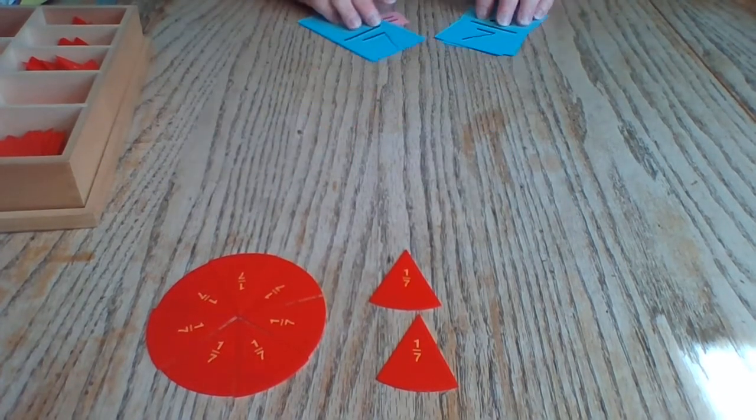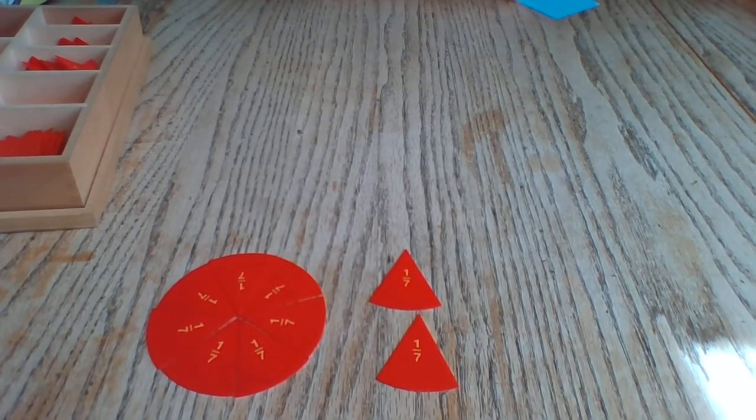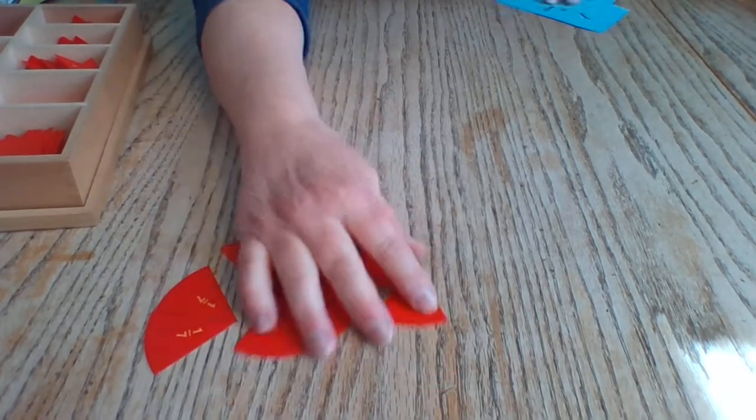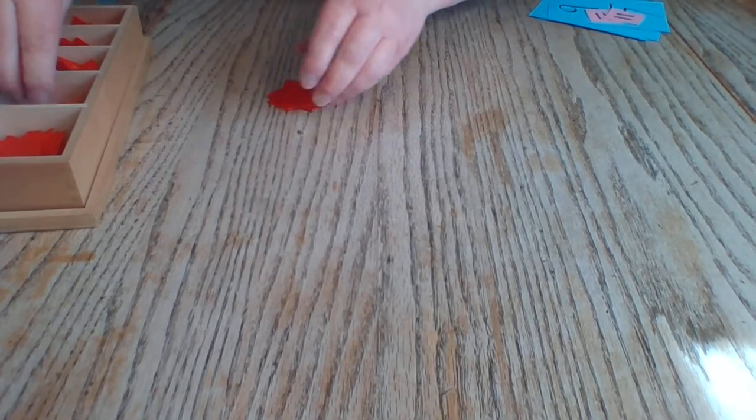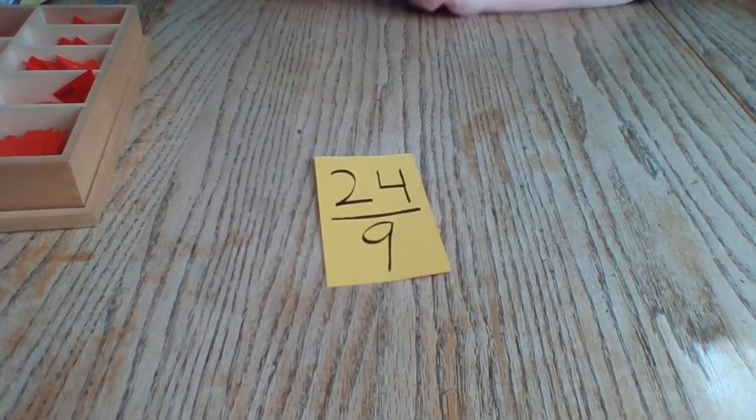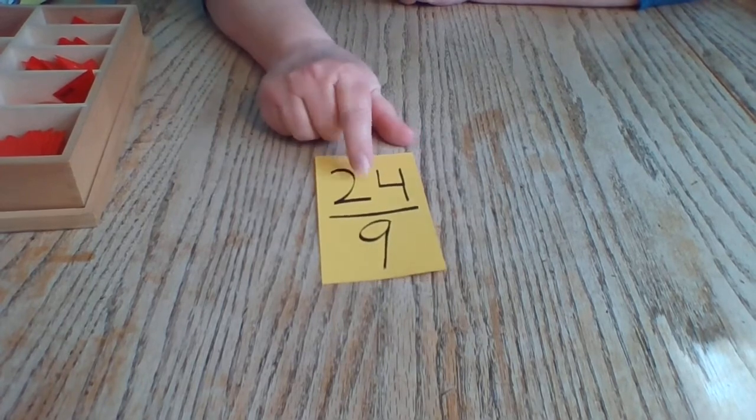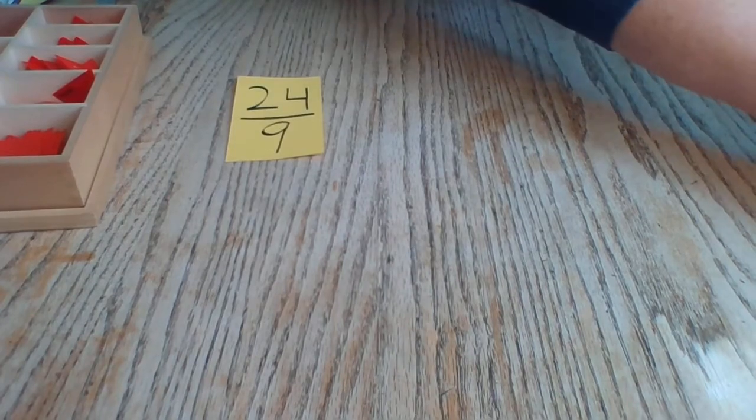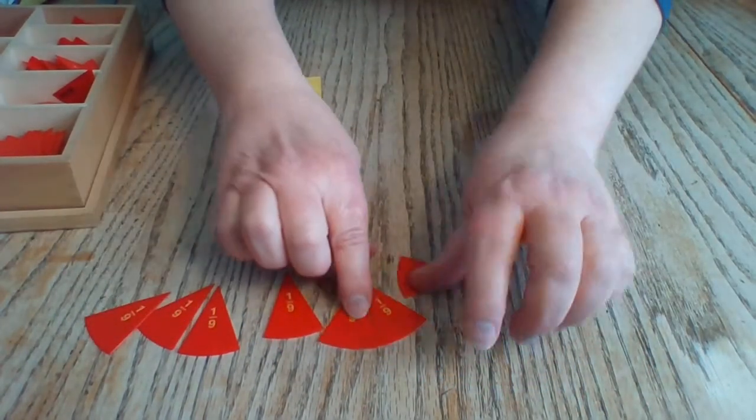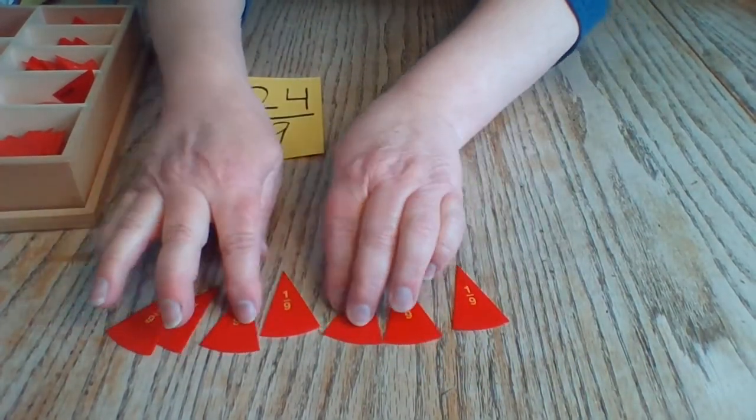Now let's try one that's very hard to imagine as an improper fraction. Let me get the sevenths put away. Let's try 24 ninths. That is an improper fraction because the numerator is much higher than the denominator. So we're going to get out 24 ninths.